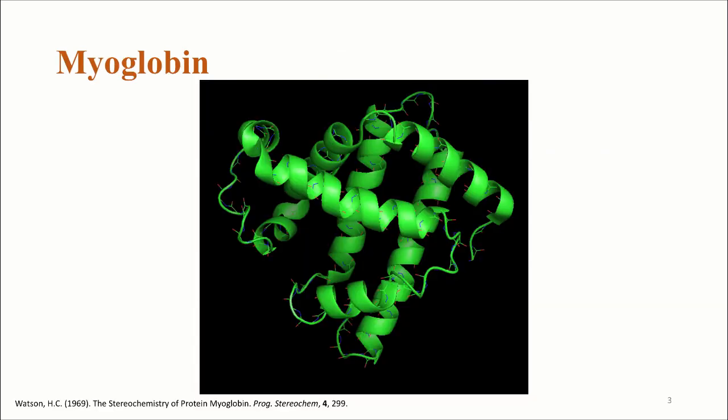To talk about these forms of interactions, we are going to be using the protein myoglobin as an example to show these interactions taking place within an actual protein. Myoglobin is the protein that carries oxygen in the muscles. Here you can see the three-dimensional crystal structure of myoglobin. The main chain of myoglobin is folded into 8 alpha helices, which is about 70% of the structure, and the other 30% is mainly formed of loops and turns.